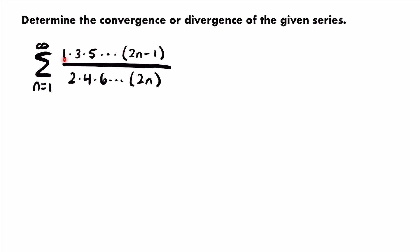In the numerator, we have 1 times 3 times 5, all the way up until 2n minus 1. All of these numbers are odd numbers — we're multiplying the odd numbers in ascending order up until 2n minus 1, which will always be odd. In the denominator, we are multiplying even numbers in ascending order: 2 times 4 times 6, all the way up until 2 times n, which will always be even since anything multiplied by 2 is even, and anything times 2 minus 1 would be odd.